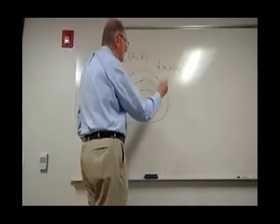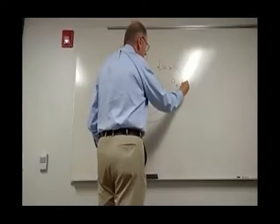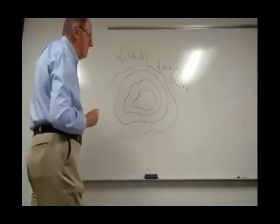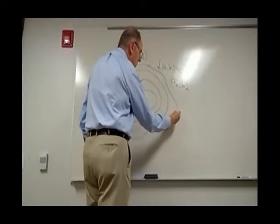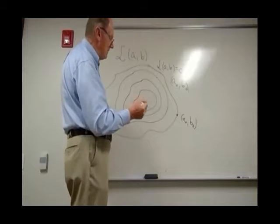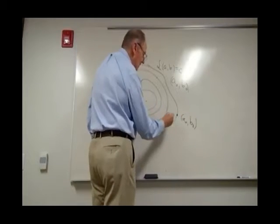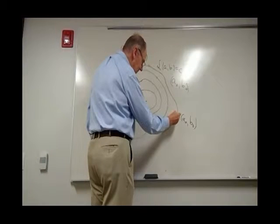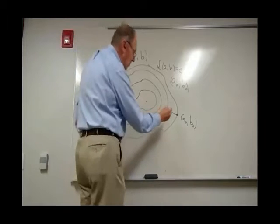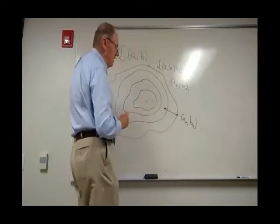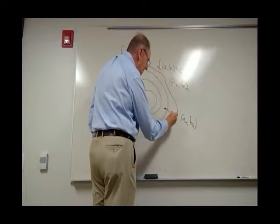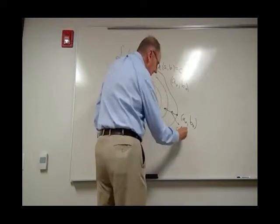If I start with some point, my A0, B0, which may lie on this level curve out here, the idea is that when I look at this point and take the gradient, the gradient at this point is a vector that points somewhere. The negative gradient points inward, so I can go in that direction to make the function smaller. If I take a small step in this direction, this step is alpha times the gradient.